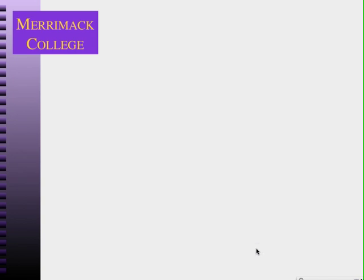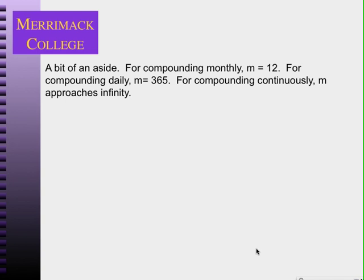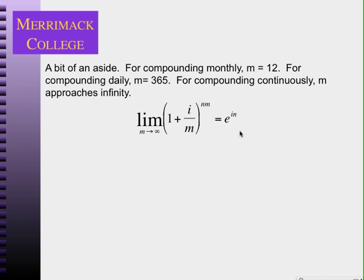This enters into lots of engineering economic problems. If we're compounding monthly, m equals 12 — that's the number of compoundings per year. If we're compounding daily, that number is 365. But if we're compounding continuously, which is very common, then m approaches infinity, and we need to take the limit of the compound interest formula. It turns out that limit equals e to the power of the yearly interest rate times the number of years.